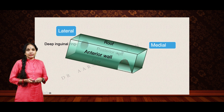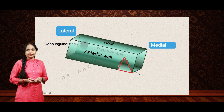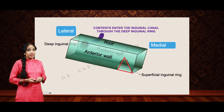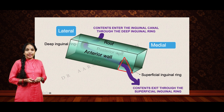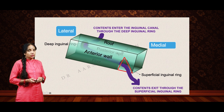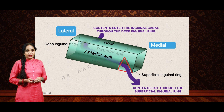Now we can clearly see that structures are passing right across. Contents enter through the deep ring, pass through the canal, and then exit through the superficial inguinal ring. That is how these structures pass through the inguinal canal.